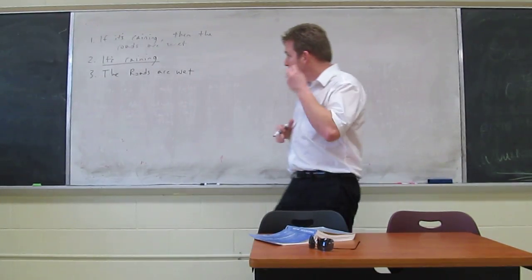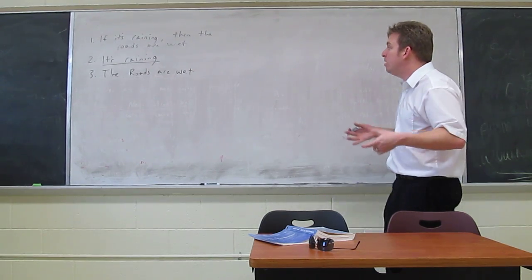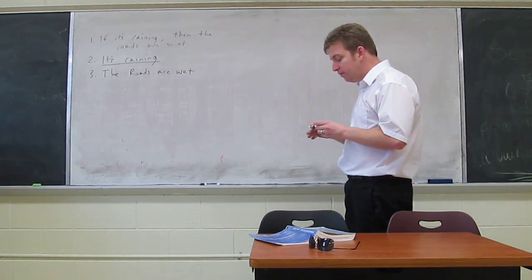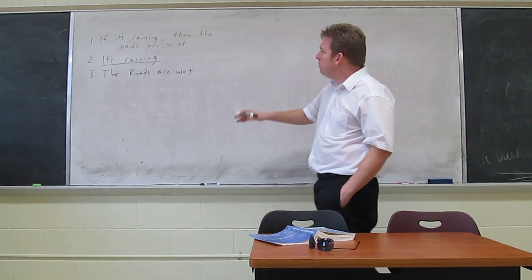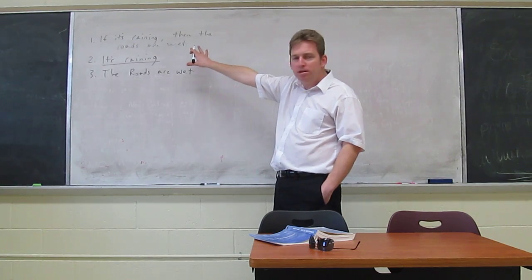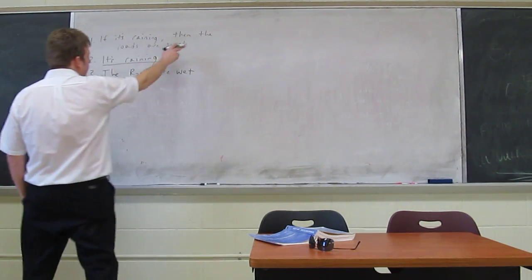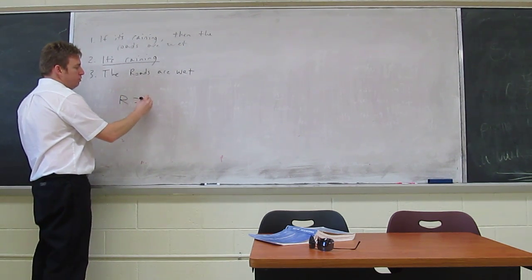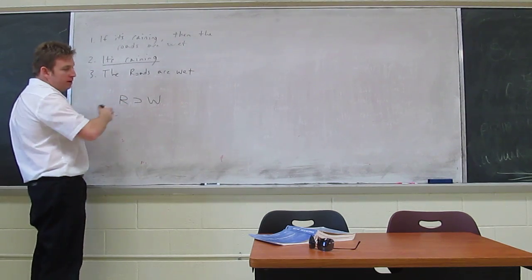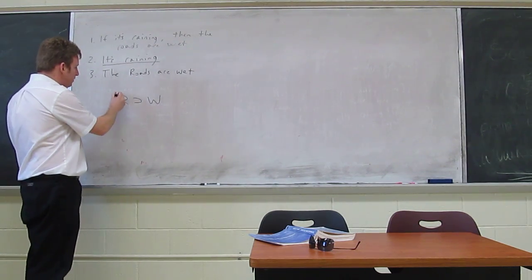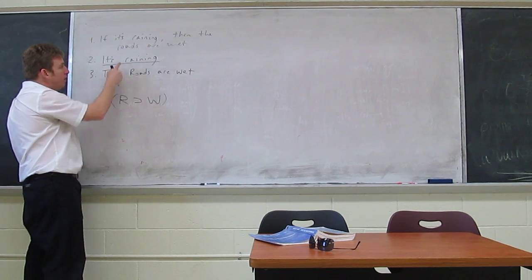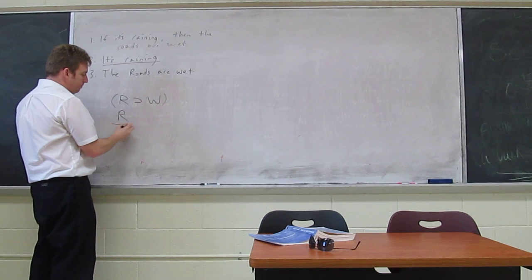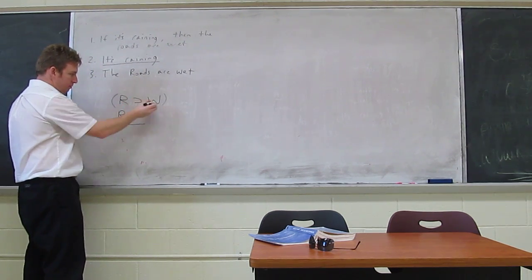Now what we want to do is use our truth tables to prove that this is valid. Hopefully we'll be able to expand that into more complex arguments where the truth tables actually teach us whether something is valid, not just confirm what we already know. We take this argument translated into logic: 'if it's raining then the roads are wet' becomes r horseshoe w, 'it's raining' is r, and the conclusion 'the roads are wet' is w.